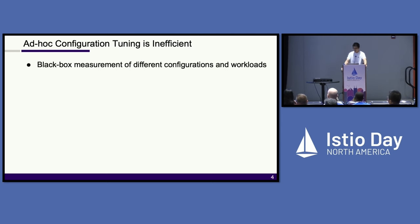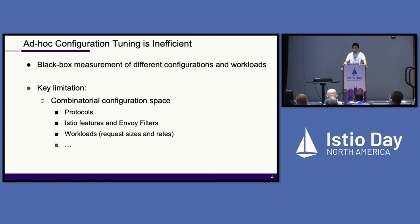To solve this problem today, developers rely on ad hoc manual configuration tuning. They do black box measurements of different configurations and workloads. However, such approaches have a key limitation. The configuration space of ECU is huge. For example, you can intercept the traffic in different protocols, and there are many ECU and Envoy features you can enable. Workload characteristics like request size and rate also have an impact on the magnitude of the overhead.